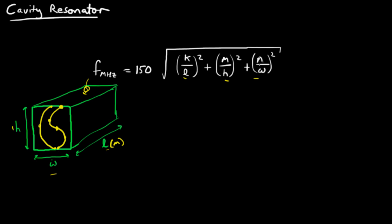And k, m, and n are just integers. They're non-negative integers, so they can be zero, one, two, three, and so on.